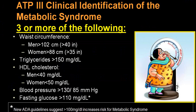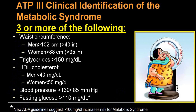The ATP-3 guideline states metabolic syndrome is three or more of the following: waist circumference, triglyceride, LDL, blood pressure, or fasting glucose. A minimum of three criteria should be present. This is also aligned with ADA — the American Diabetes Association — guidelines. Whichever criteria you use, all come to essentially the same conclusion, with slight variation in figures.